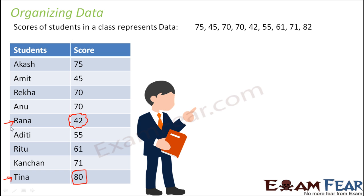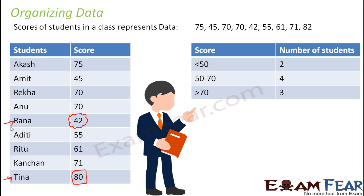What could be another way? Instead of writing names of all the students and their respective marks, you make two columns. In one column, you have all those who scored less than 50, all those who scored 50 to 70, and all those who scored more than 70. Then you just write how many students fall in each range. Looking at the table, Akash, Tina, and Kanchan — three people — scored more than 70. Between 50 to 70 were four, and less than 50 were two.